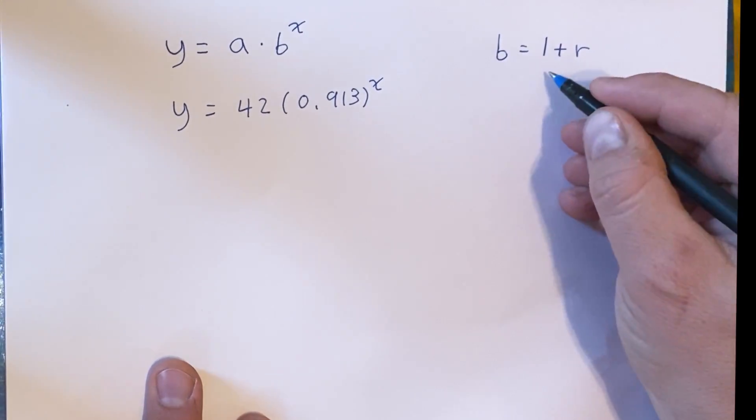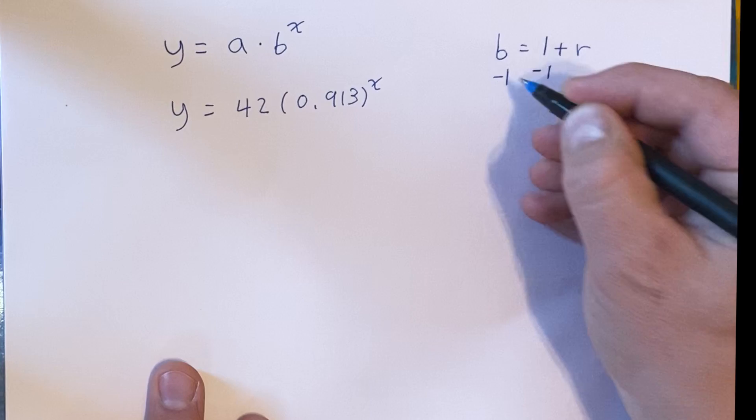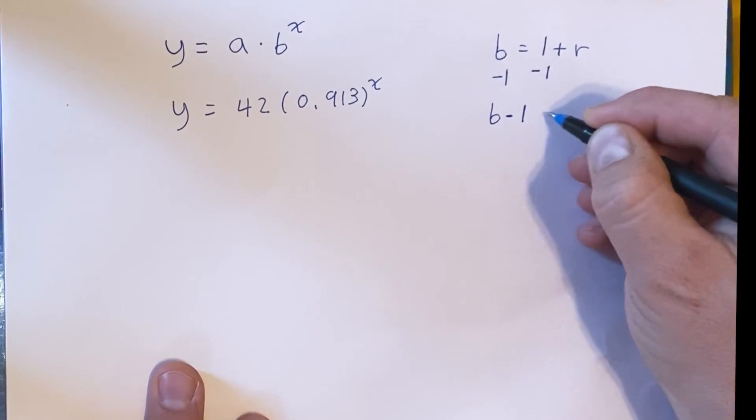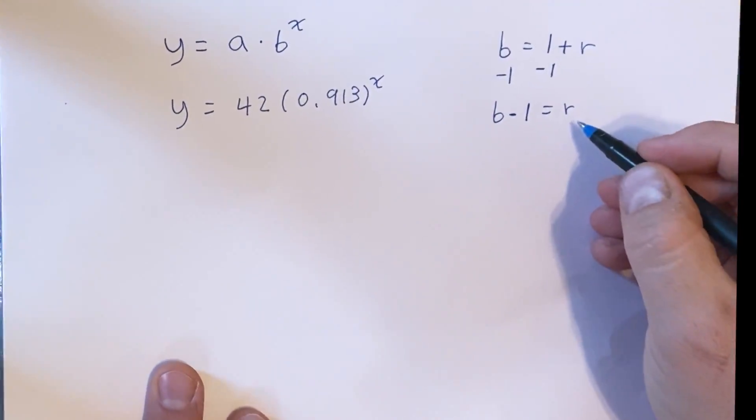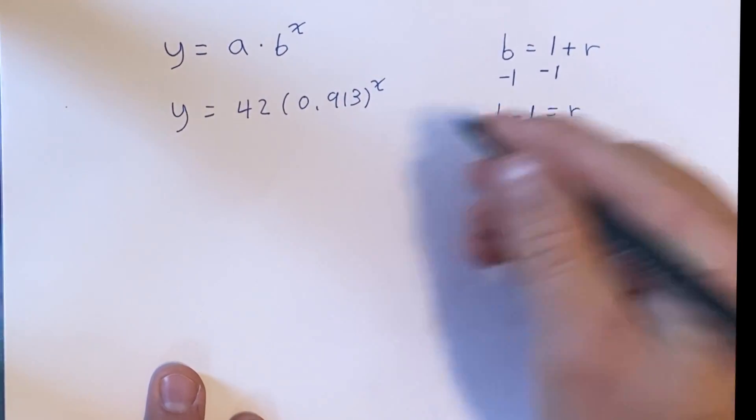We can also solve for r. To do that, we just subtract 1 from both sides. And then we have b minus 1 equals r. This is our literal equation for r, and we can use this to figure out if we have a certain b, what our r is.